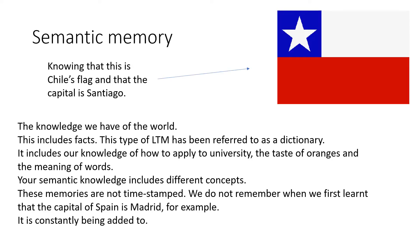Next we have semantic memory. I've got an example of a flag on the right-hand side — that is Chile's flag and the capital is Santiago. This is our knowledge of the world and it includes things like facts. Long-term memory of this type — semantic — has been referred to as a dictionary and an encyclopaedia. It includes our knowledge of things like how we would apply to university, what the taste of oranges is, and the meaning of words.